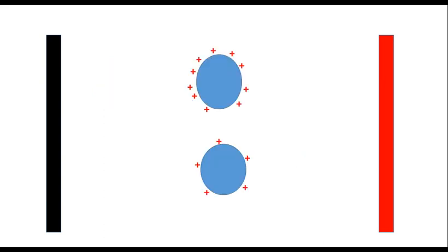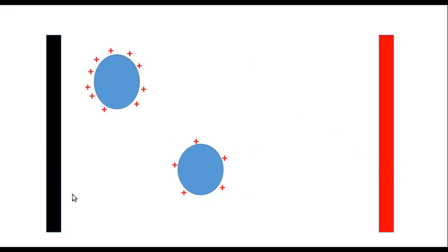Condition two: if we have two particles of the same size but with different charges, and we subject them to the same electric field for some time, then migration will occur. Because they are positively charged, they will move toward the negatively charged electrode. But the particle with more charge will move faster, and the particle with less charge will move slower. After some time, if we check, both particles will have separated.